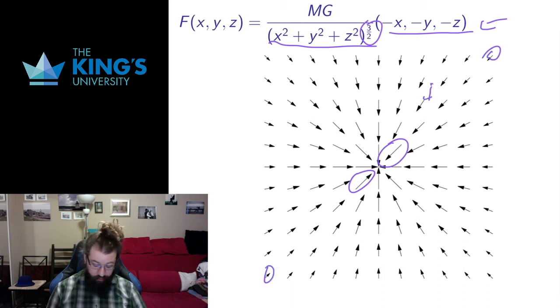and I get smaller forces when I'm further away. So again, at each point, I have an arrow assigned to that point, a vector assigned to that point, indicating the force of gravity per unit mass at that point.